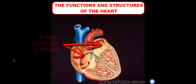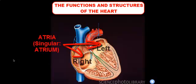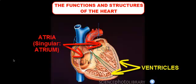The two top chambers are called the atria — we have the right atrium and the left atrium. Below them, we have the two ventricles. The ventricles are the bottom compartments that kind of have that V shape to them. We have the right ventricle and the left ventricle.